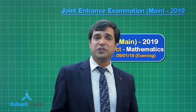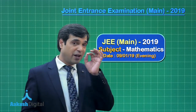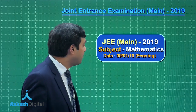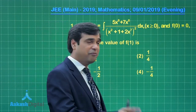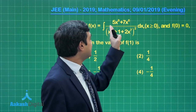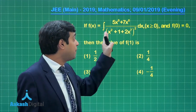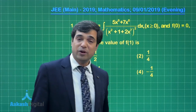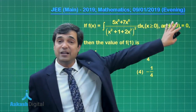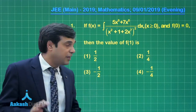Hello everyone, welcome to the solution part of JEE Main 2019 Mathematics paper. Today we are going to talk about the 9th January 2019 evening shift paper mathematics. Let us start with question number one: if f(x) equals the integral of (5x⁸ + 7x⁶) divided by (x² + 1 + 2x⁷)² dx, we have to find the value of f(1). The initial condition f(0) = 0 is also given. So this is a question from integration.